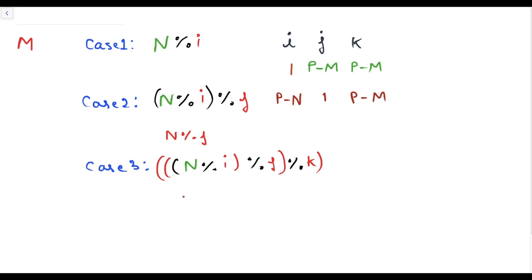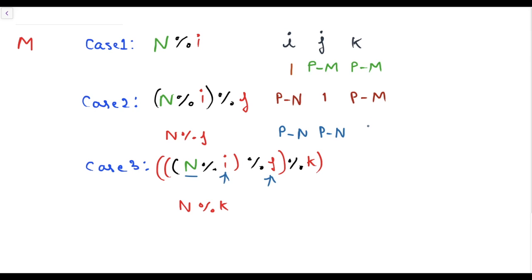In case 3, we want our answer from k — that is, we want m from n modulo k. To achieve this, n must not be affected by i or j. So the values of i and j must be greater than n, giving p minus n choices each. The value for k is 1, because this time k gives the answer.